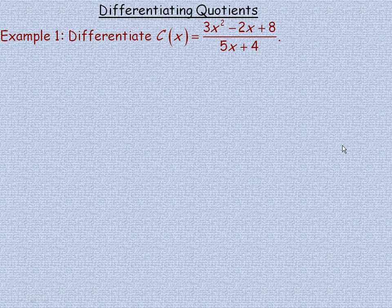In this lesson we're going to take a look at differentiating quotients. In the first example it says differentiate c of x equals 3x squared minus 2x plus 8 over 5x plus 4. So here's a quotient — a rational expression.